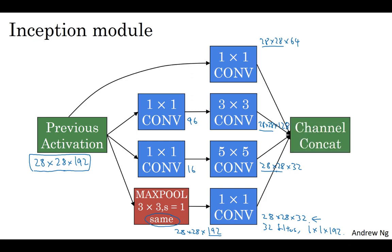And then finally, you take all of these blocks and you do channel concatenation. Just concatenate across this 64 plus 128 plus 32 plus 32 and this, if you add it up, this gives you a 28 by 28 by 256 dimensional output. And channel concatenation is just concatenating the blocks that we saw in the previous video.